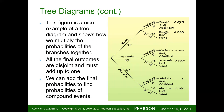Here's what a tree diagram looks like. You multiply the probabilities of the branches together. The final outcomes are disjoint and must add up to one. We can add the final probabilities to find the probabilities of compound events.